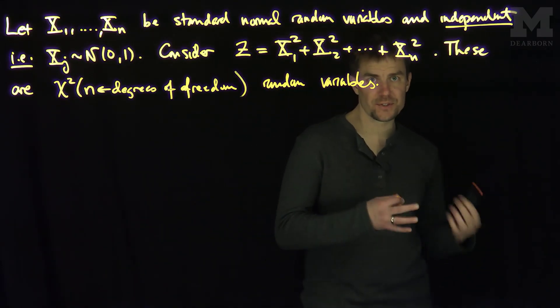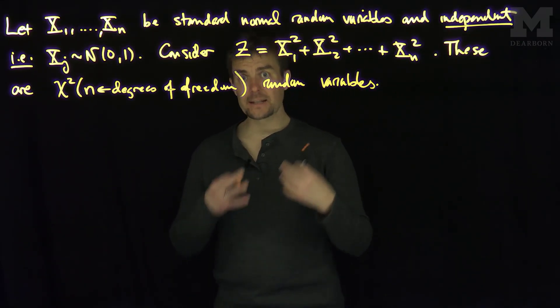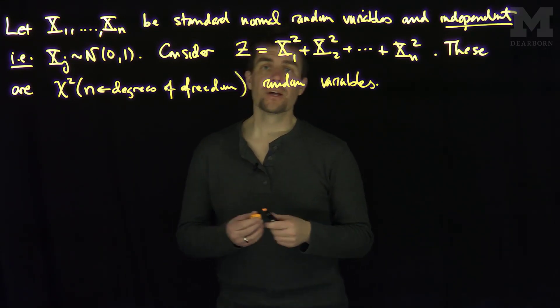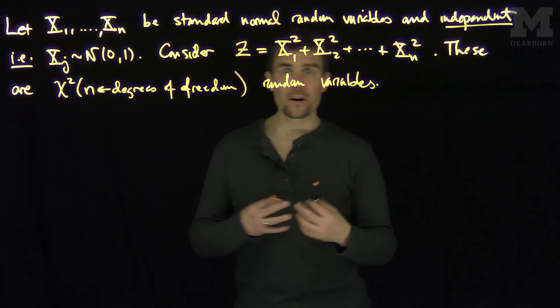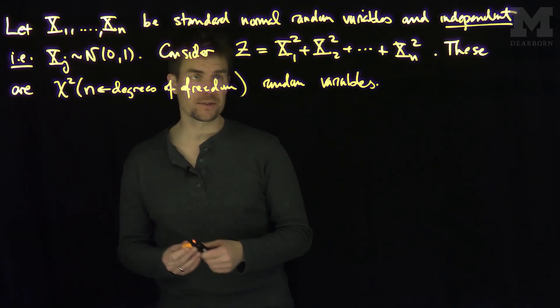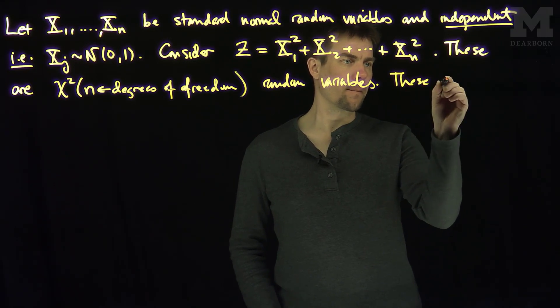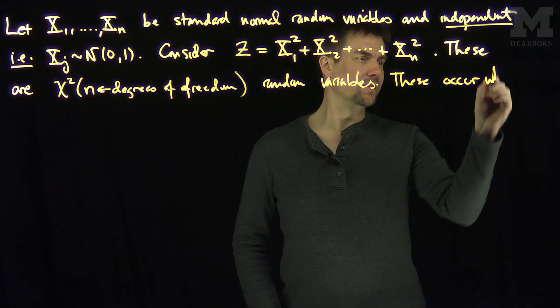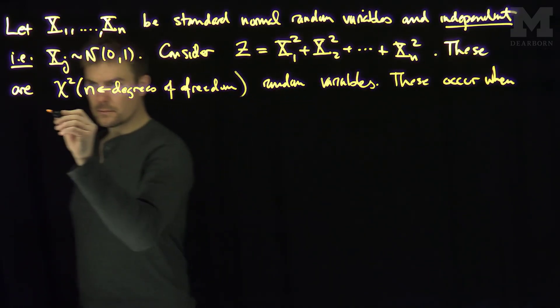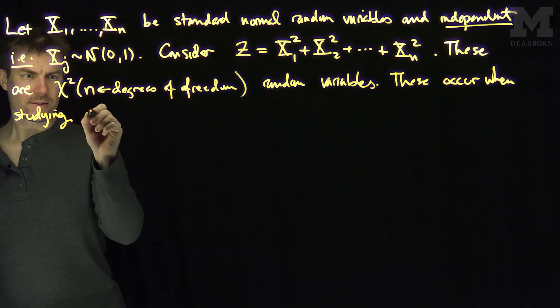What I'd like to do is give you a sense of what these random variables are doing. These random variables appear a lot when you're estimating sample variances. So we need to formalize what they are and understand properties of their distribution in order to prove some results about sample variances. So these occur when studying sample variances.